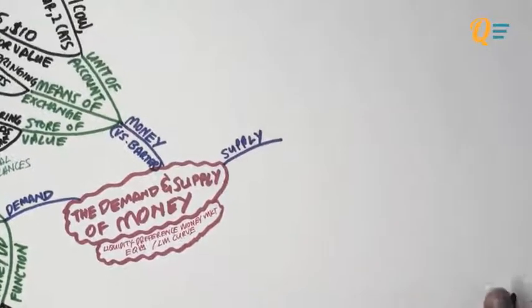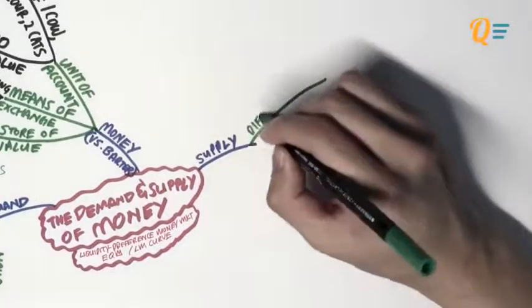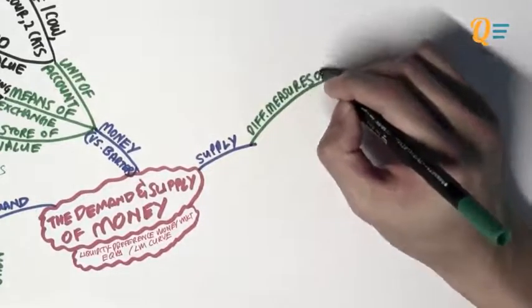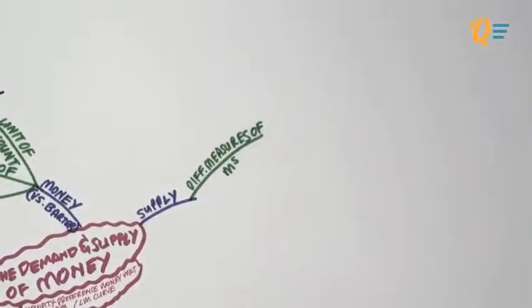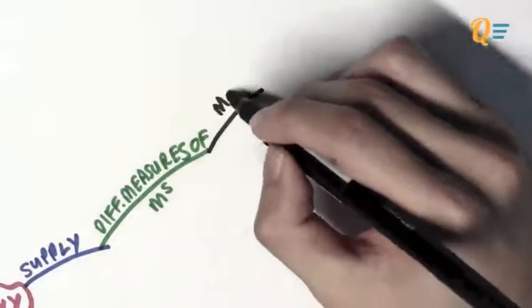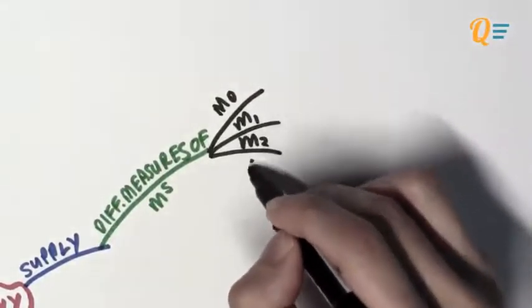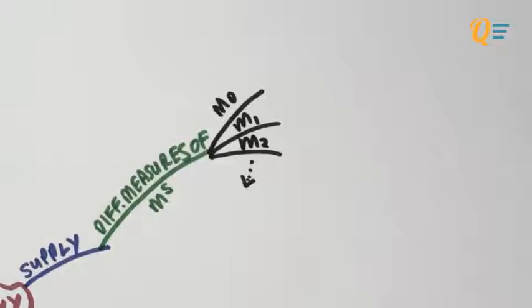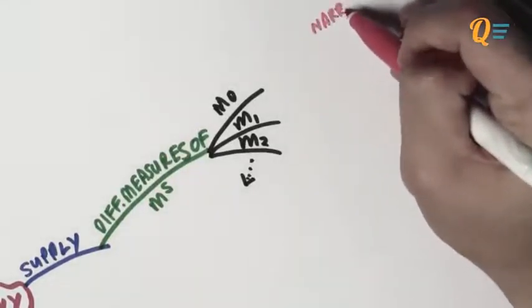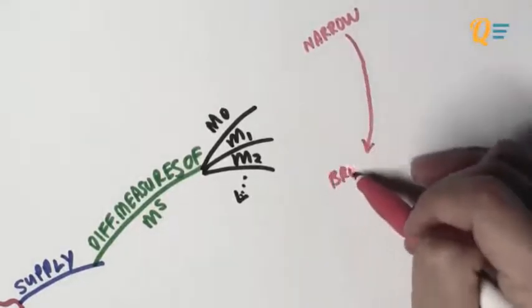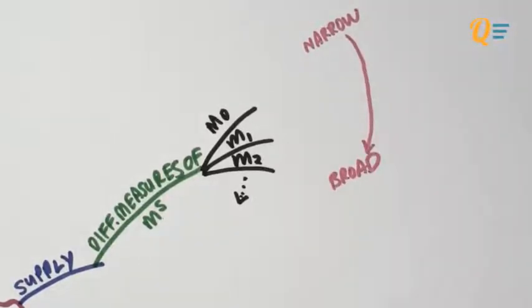Now that we've got the demand side settled, we can talk about the supply of money. There are basically different measures of money supply. If you've read your subject guide, you'll notice definitions of money in terms of M0, M1, M2, M3, and so on. These are definitions of money supply. M0 is the most narrow definition, and as the number gets bigger, the definitions become broader.